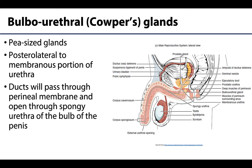The last set of glands discussed in this video are the bulbourethral glands, also called Cowper's glands. These pea-shaped glands are located posterolateral to the membranous portion of the urethra — that portion between the prostatic urethra and the spongy urethra. The bulbourethral glands produce a mucus-like secretion that enters the spongy urethra through fairly long ducts passing through the perineal membrane. The secretions of these glands are initiated during sexual arousal.